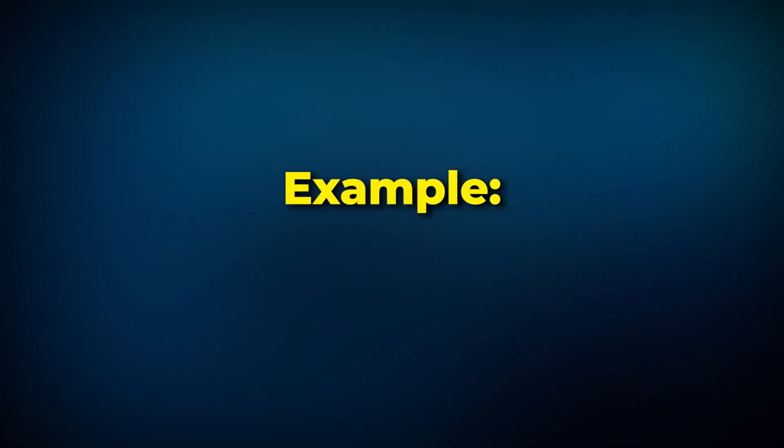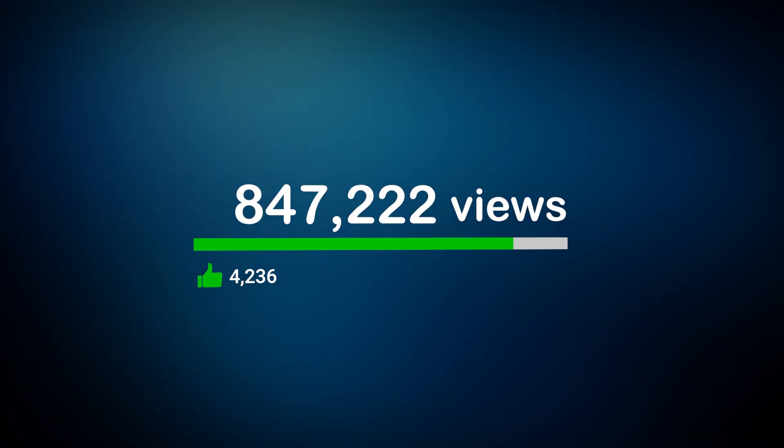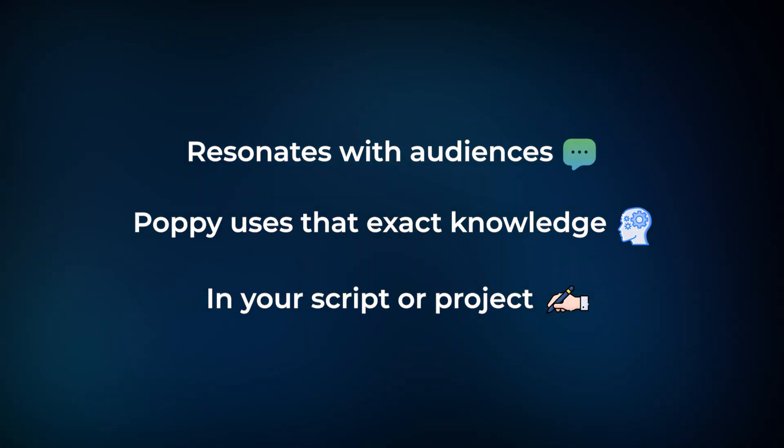For example, let's say I want to create a video about AI image generators. I could build a group that includes YouTube videos on that topic, Instagram posts discussing image generation, and even forum threads where people are talking about different AI tools. This is incredibly powerful because all of this content has already been approved by the audience. When I'm creating scripts for my channels, I know I'm pulling from content that's already been proven to work with real people. If a video already has millions of views, I know that information resonates with audiences, and Poppy makes sure that's the exact knowledge being used in my script or project.